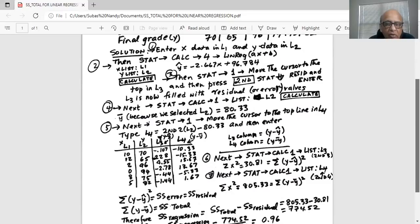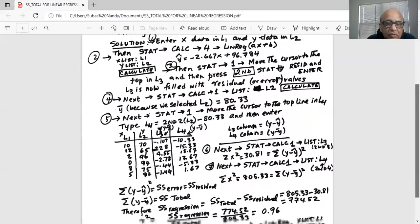Next step is STAT, CALC 1. Now the list will be L4, which is second and four. And we are also interested in sum of x squared, which is 805.33. Remember L4 is filled up with y minus y bar squared. So y minus y bar, and we are now getting sum of y minus y bar squared, which is 805.33.